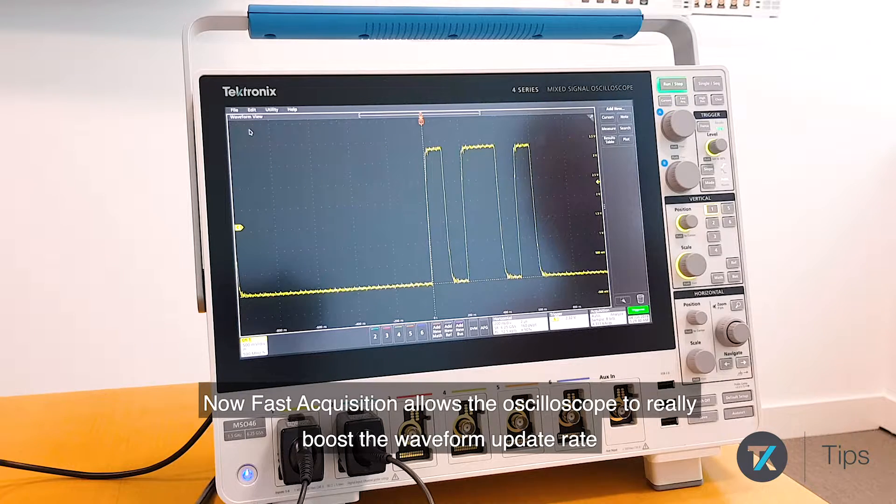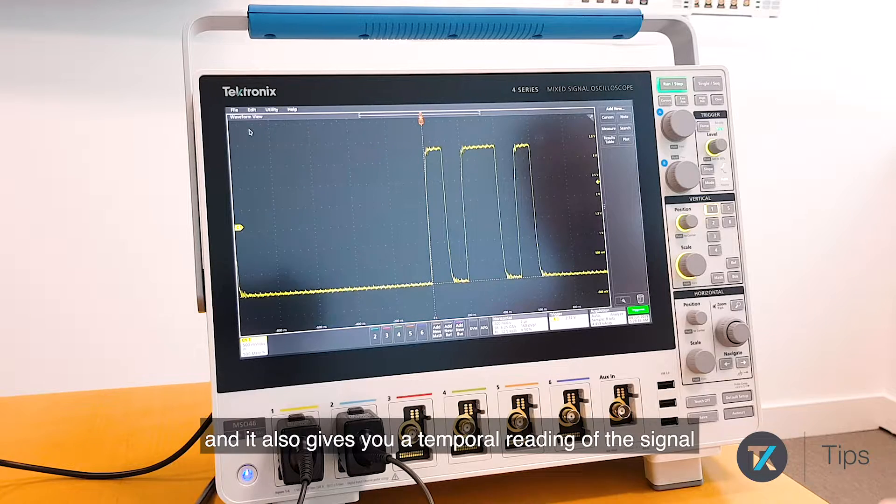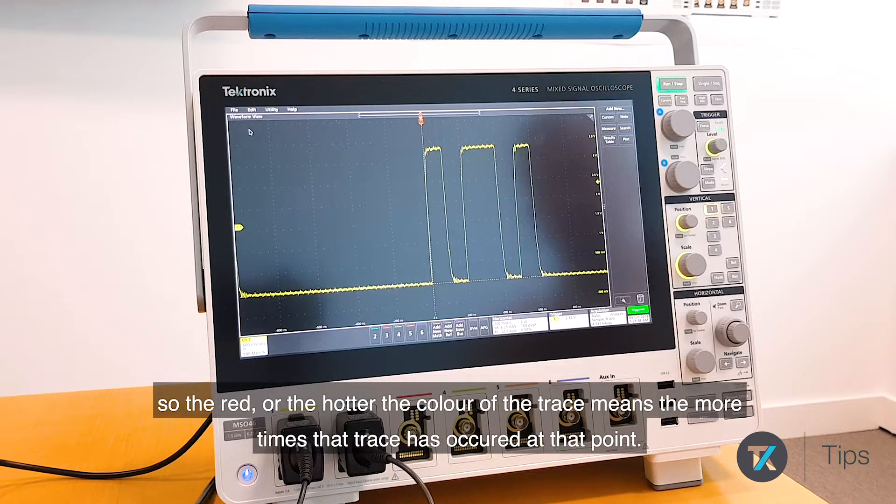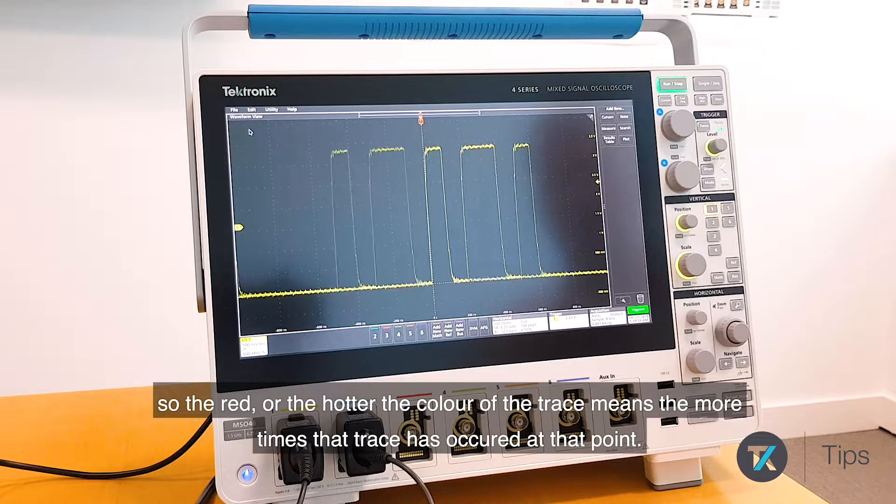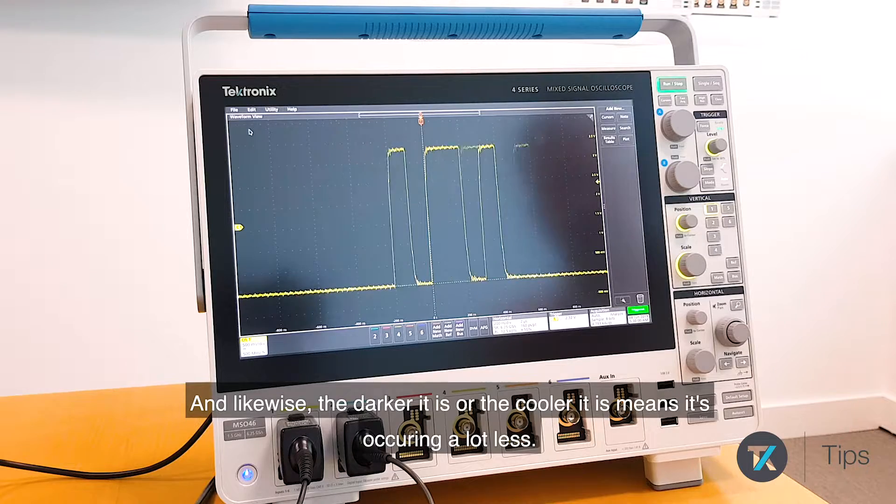Now Fast Acquisition allows the oscilloscope to really boost the waveform update rate. And it also gives you a temporal reading of the signal. So the red or the hotter the color of the trace means the more times that trace is occurring at that point. And likewise, the darker it is or the cooler it is means it's occurring a lot less.